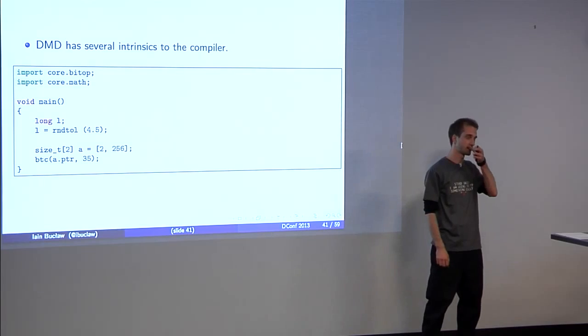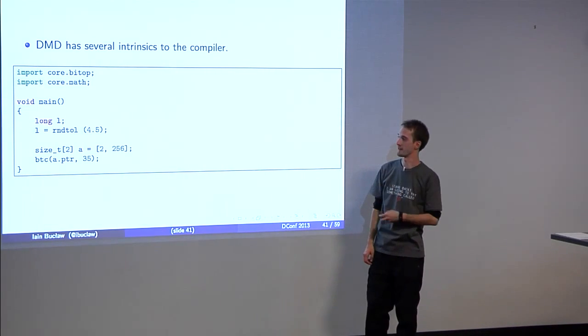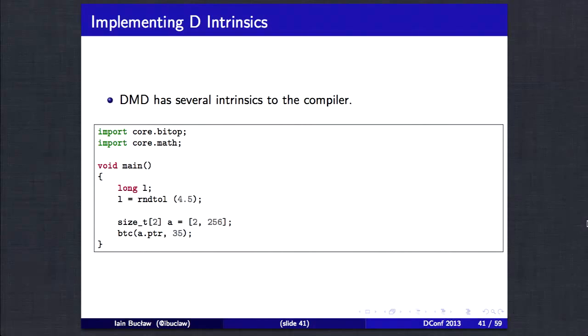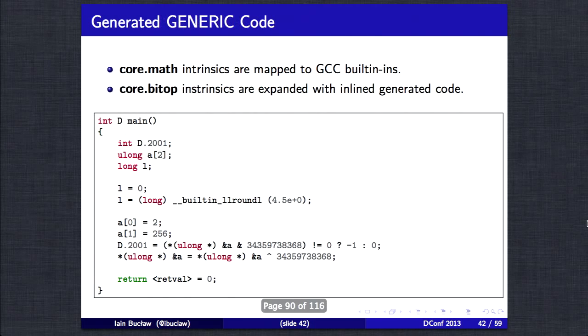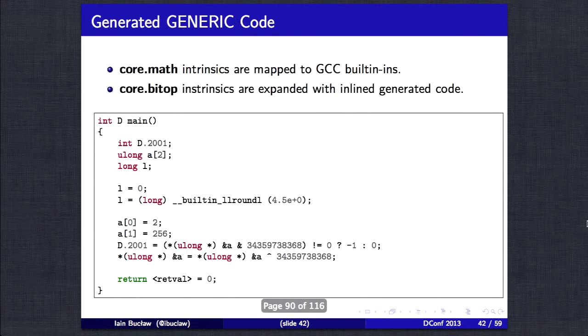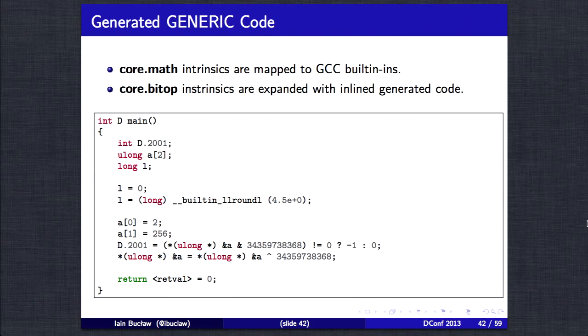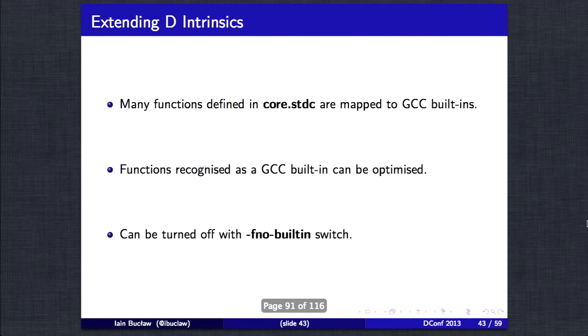Implementing intrinsics into D. D already has quite a few intrinsics. These are located within core.bitop and core.math. The way that GDC implements this, for core.math in particular, they are all mapped to GCC builtins, whereas anything in core.bitop with the exception to the inp, outp related functions, they're actually code-generated on the fly. As you can see here.